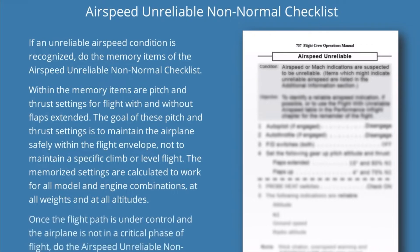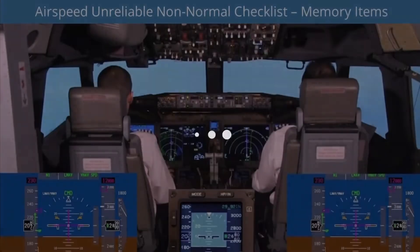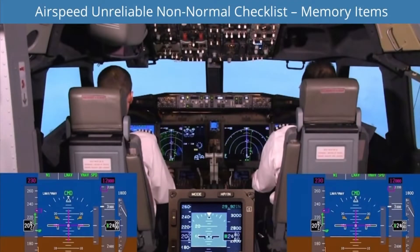The memorized settings are calculated to work for all model and engine combinations at all weights and at all altitudes. Once the flight path is under control and the airplane is not in a critical phase of flight, do the airspeed unreliable non-normal checklist. This video shows an unreliable airspeed scenario after takeoff.